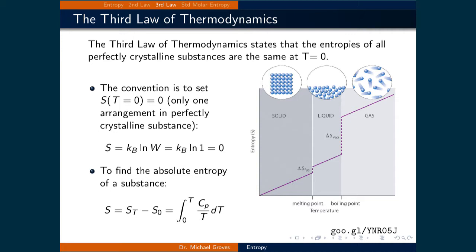To find the absolute entropy of a substance S, that's equal to the entropy at temperature T minus the entropy at 0 Kelvin, and that's equal to the integral between 0 and T of the heat capacity divided by the temperature times dT. The figure on the right illustrates the result of this integral: the change in entropy as a function of temperature is continuous up until phase transitions, at which points there is a discontinuous change in entropy due to the phase change.